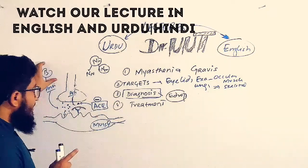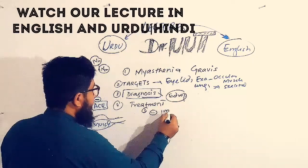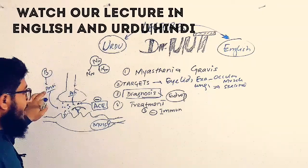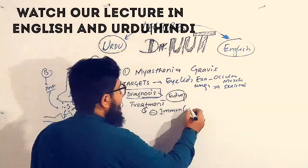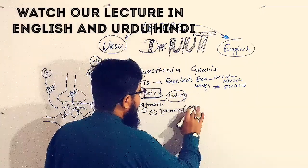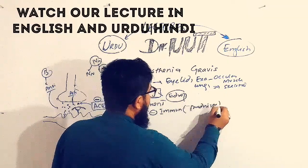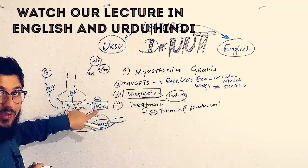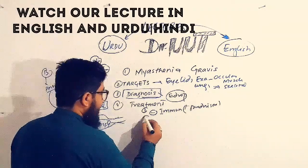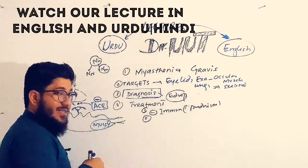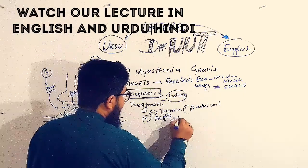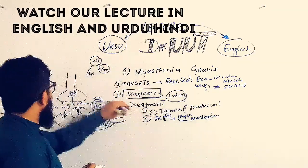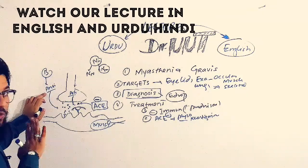How will we treat Myasthenia Gravis patients? Since it is an autoimmune disease, the first thing is to inhibit the immune system — specifically to stop B cells from releasing antibodies. So we give immunosuppressants; one example is prednisone. The second step of the treatment strategy is to target acetylcholinesterase by giving acetylcholinesterase inhibitor drugs. Examples of acetylcholinesterase inhibitors are physostigmine and neostigmine.